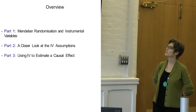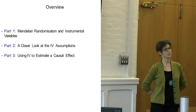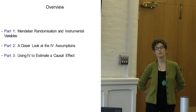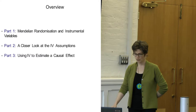Mendelian randomization is really an instrumental variable method, and it stands or falls with the assumptions — how much you believe in the assumptions. It's therefore always a question: can we touch the assumptions, or can we at least do something that makes them halfway plausible? We will look at that.